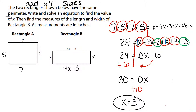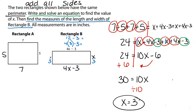That answers the first question — write and solve an equation. The second part of the problem tells us to find the measures of the length and width of rectangle B. For rectangle B, our two edges are 3 because they represent the x value; we got x equals 3. For the top and the bottom, 4x minus 3 — we plug in our answer: 4 times 3 minus 3. 4 times 3 is 12. 12 minus 3 gives us 9. The top and bottom sections are 9. The width is 3 inches. The length is 9 inches.